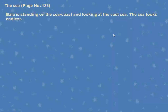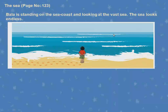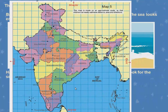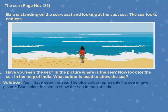Now, The Sea. Bala is standing on the sea coast looking at the vast sea — the sea looks endless. This is page number 123. Bala is standing at the beach looking at the vast sea. Can we see any ending point for the sea? No, it is endless. Now look for the sea in the map of India — what color is used to show the sea? It is blue color. Blue color represents the sea in the map.